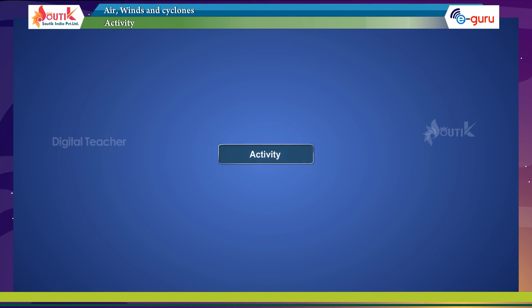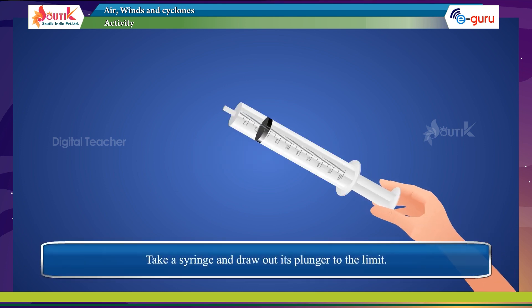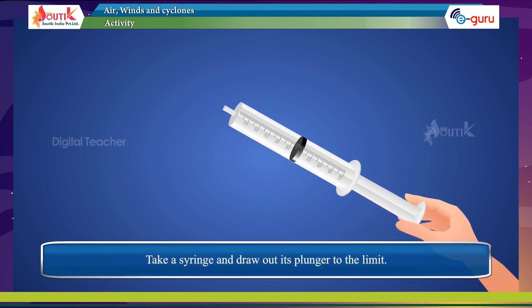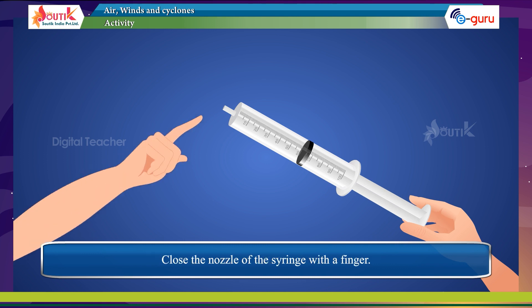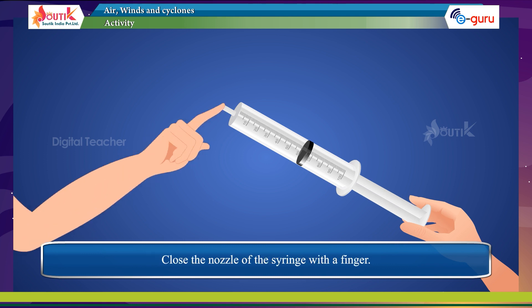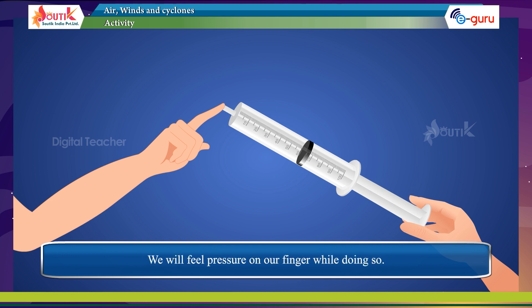Activity: Take a syringe and draw out its plunger to the limit. Close the nozzle of the syringe with a finger. When we press the piston, we find we cannot press it all the way in. We feel pressure on our finger while doing so — this demonstrates that air exerts pressure.